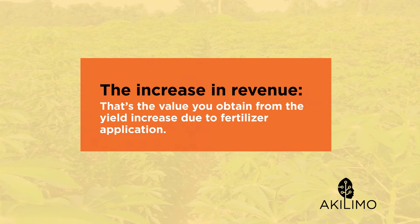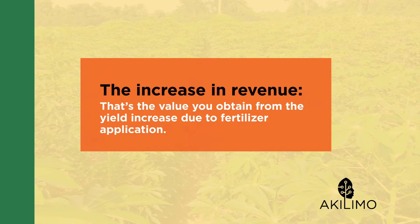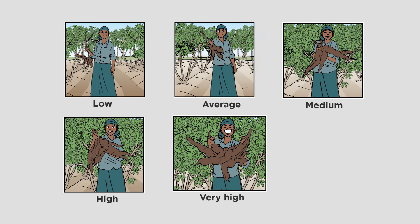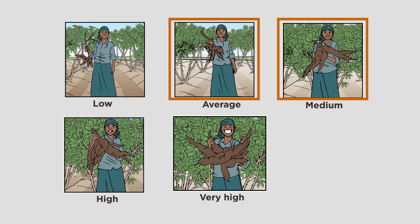Remember, a fertilizer investment is only recommended in some soils. We distinguish five levels of soil fertility, and you should only consider investing in fertilizer if your soil is poor (category 2), medium-fertile (category 3), or fertile (category 4).